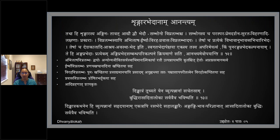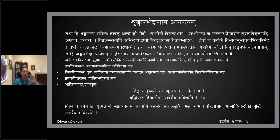Khandita naika — when the nayaka comes near her and he has the chinham of anya nayaka sambhogaha — anya sambhoga chinnitaha nayakaha — when that nayaka comes to her, she becomes very jealous and separates herself from him. She does not want to be with him at that point because she is extremely jealous. That is called Irshya Vipralambha — the separation due to irshya.